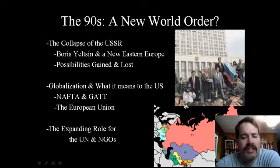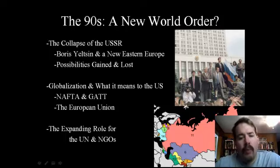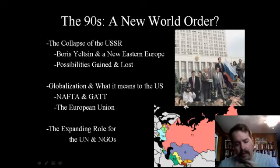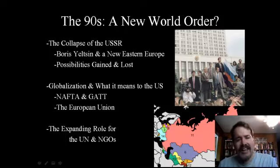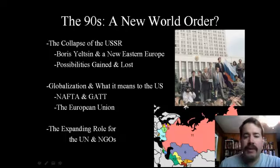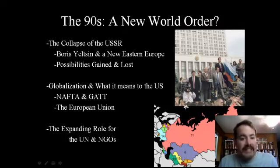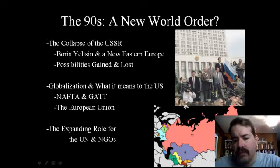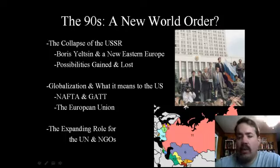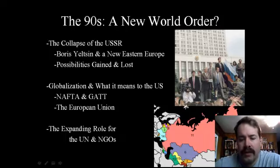East Germany ceases to exist because in early 1990 the two Germanies, East and West, become one Germany — the current Germany. But it's not a blending of the two. Instead, it is West Germany taking over the territory and infrastructure of an East Germany that just quit being in existence. Of course, in the 1990s there is not peace in Europe — there is more war in Europe, and we'll talk about post-Cold War war in a minute.